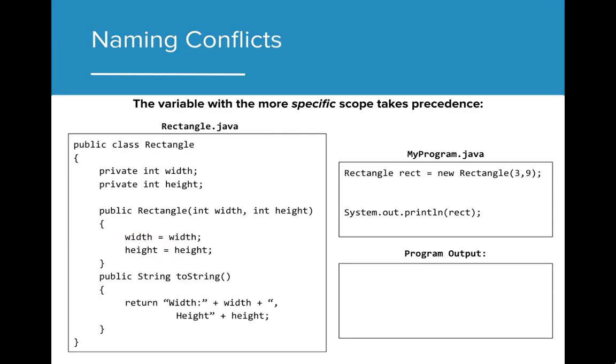This becomes crucially important when attempting to initialize the instance variables that we create for our class files. In this example, the name of the instance variables matches the formal parameters that are input into the rectangle constructor. When we create a new rectangle, 3, 9, and try to print the values of width and height, we see that the result is unusual, 0, 0.